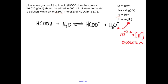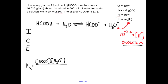I've left room underneath my reaction to make an ICE table — I for initial concentration, C for change in concentration, and E for equilibrium concentration. I need to fill this in for all species in the equilibrium expression. Ka equals the concentration of the products, HCOO⁻ times H₃O⁺ — the same as H⁺ — divided by the reactants. We don't include the concentration of water, since liquid water doesn't change concentration, so we leave it out.